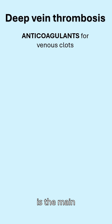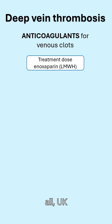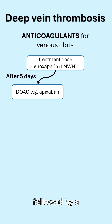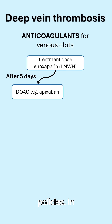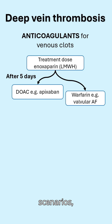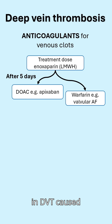Anticoagulants are the main treatment for venous clots. Most, if not all, UK hospitals start with treatment dose enoxaparin, followed by a direct oral anticoagulant such as apixaban, depending on local trust policies. In some scenarios, warfarin is given, such as in DVT caused by valvular atrial fibrillation.